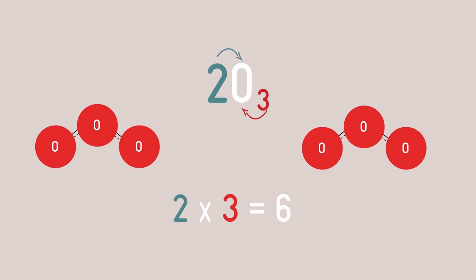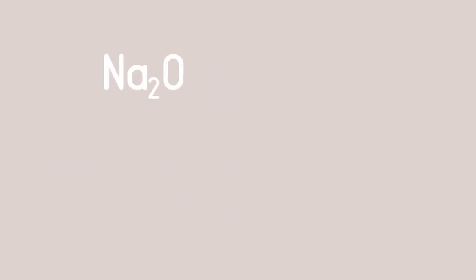Until you are really familiar with using formula symbols like this, it is much easier to draw out the molecules in full as we have done here. So Na2O has two sodium atoms and one oxygen atom.